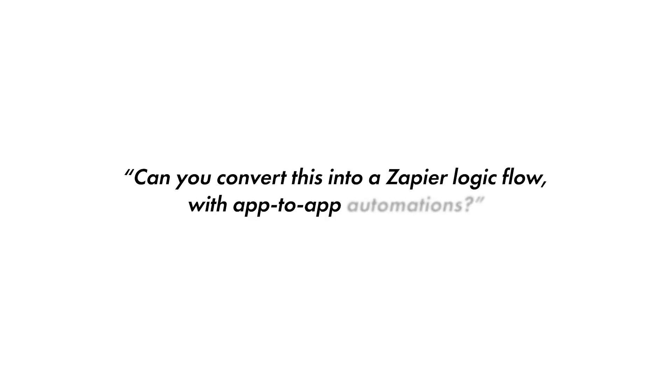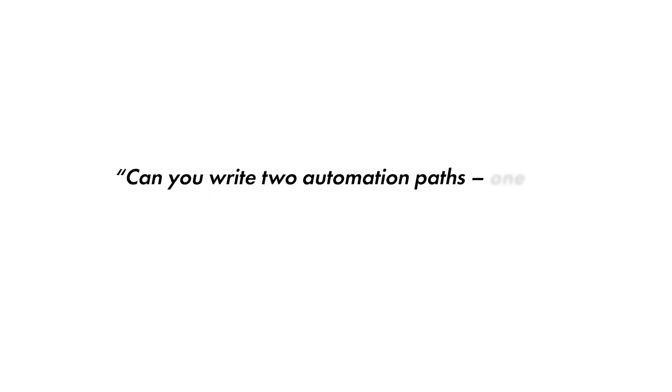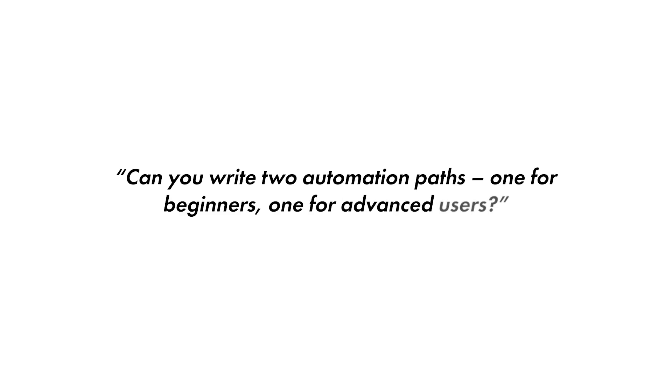This will save you so much time when building out new automations with more complex logic or exclusions. And here are some bonus prompts for even better results: 'Can you convert this into a Zapier logic flow with app-to-app automations?' Or 'Can you write two automation paths — one for beginners and one for more advanced users?'